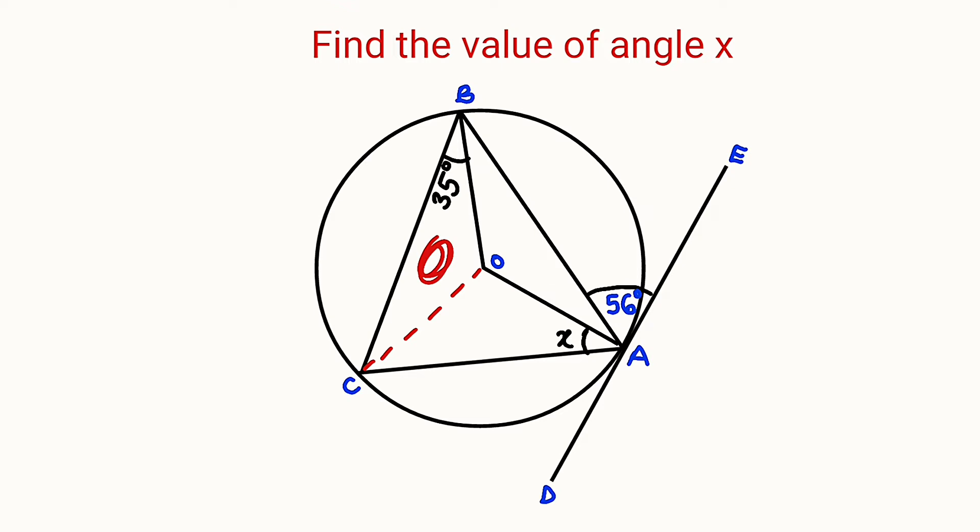It's an isosceles triangle. Why? Because this is a chord that forms an angle to the center. And that triangle at that point is called an isosceles triangle. And the base angles of an isosceles triangle are equal. Therefore,